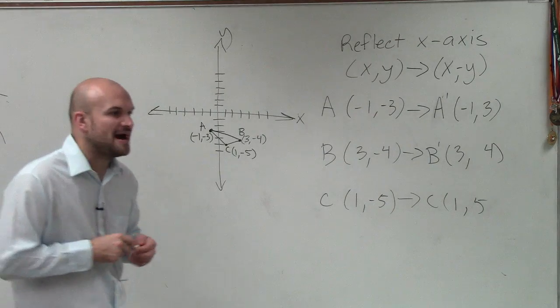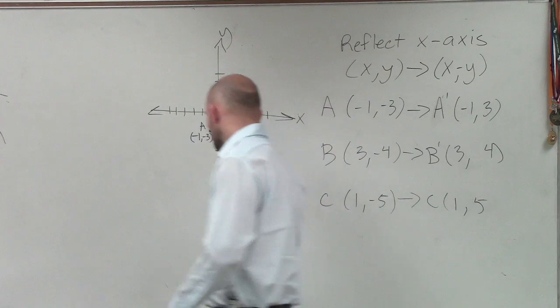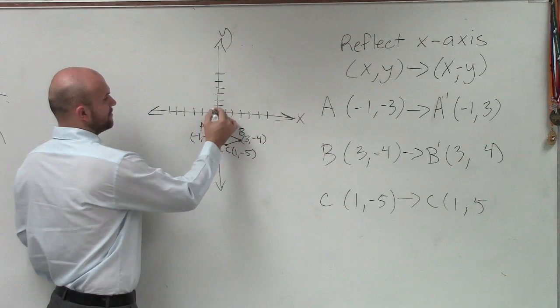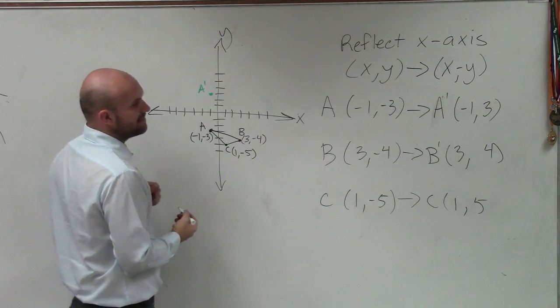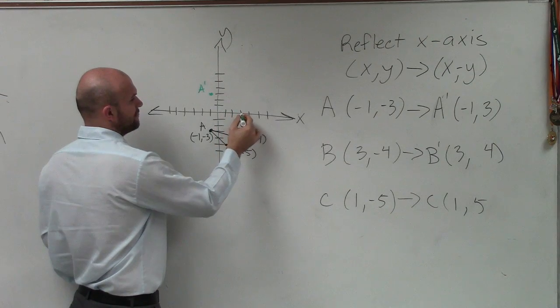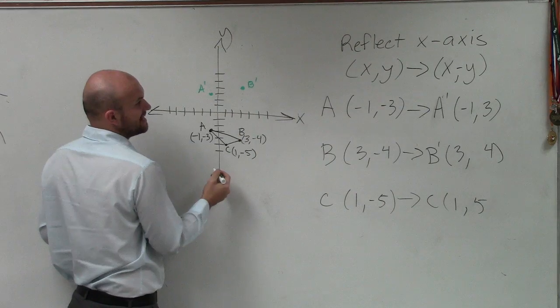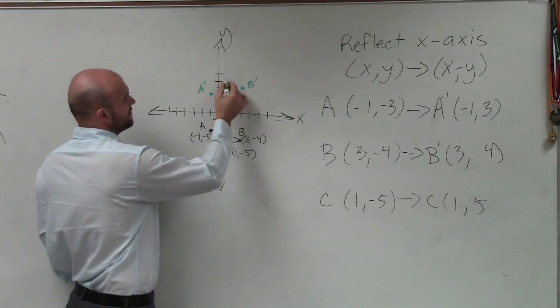So now, once I've found the three new points, I can just go ahead and graph those. So let's go and plot them. So A prime is at (-1, 3). B prime is at (3, 4). And then C prime is at (1, 5).